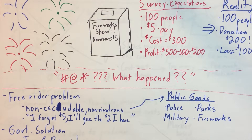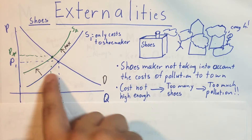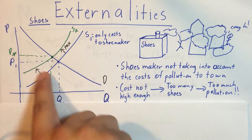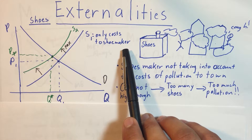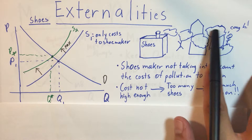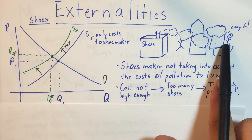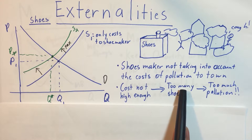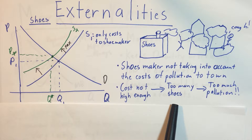Next let's talk about externalities. Consider the market for shoes — the blue lines represent supply and demand. The supply curve only counts the costs to the shoemaker: labor, machines, rent. It's not including the pollution being imposed on the town. The shoemaker isn't taking into account the cost of that pollution, so the costs aren't high enough, meaning we get too many shoes and too much pollution — an inefficient quantity at Q1.